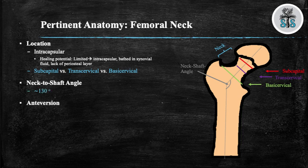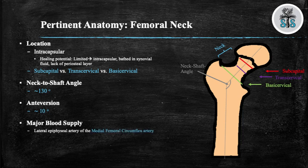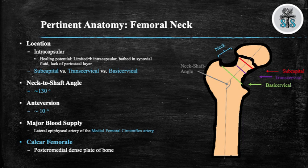The average femoral neck anteversion is 10 degrees. The major blood supply is the lateral epiphyseal artery of the medial femoral circumflex artery. You should also be aware of the calcar, which is located in the posterior medial aspect and contains a dense plate of bone. The calcar provides support to the femoral neck as it is a transitional area to transfer stress from the trabecular bone of the femoral head and neck to the cortical bone of the femoral shaft.